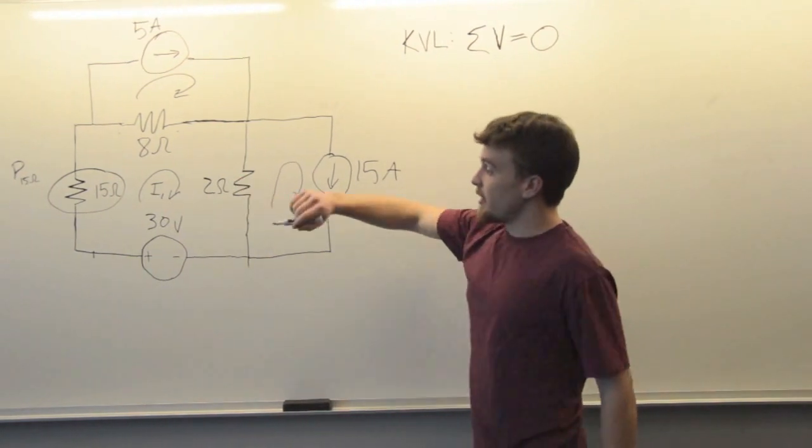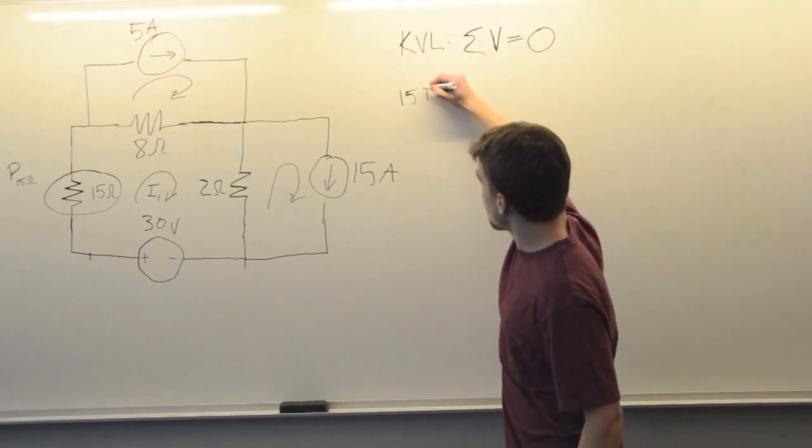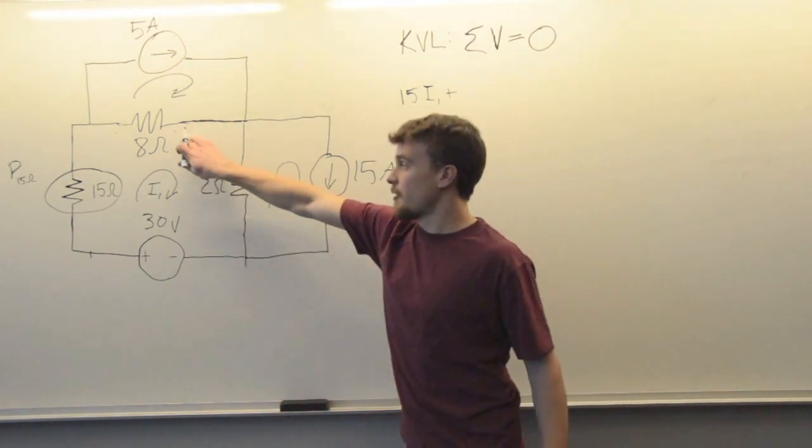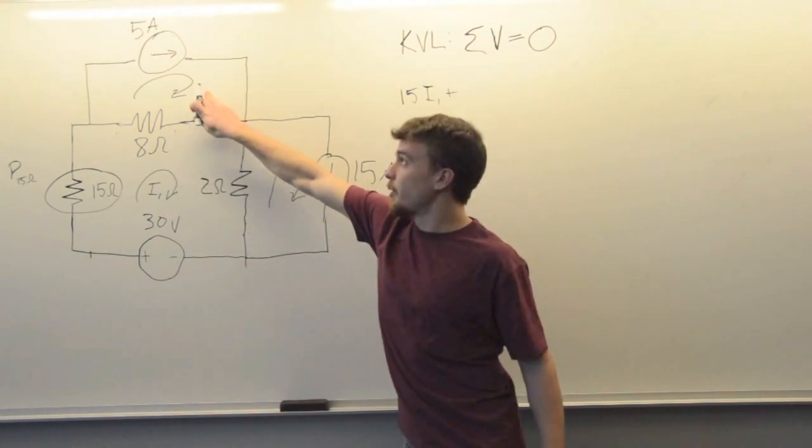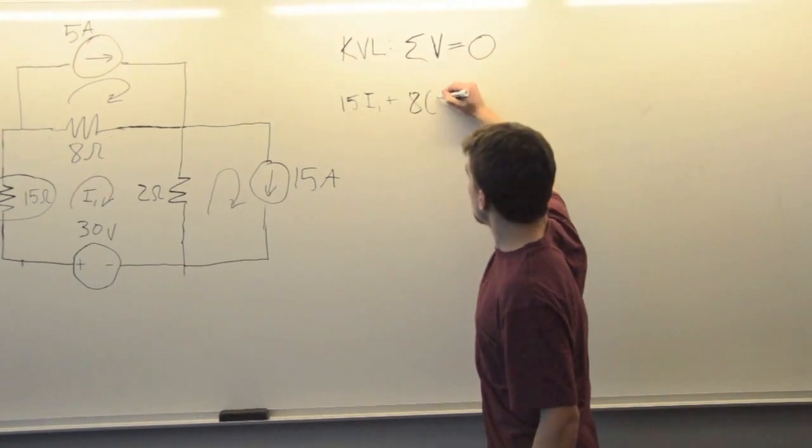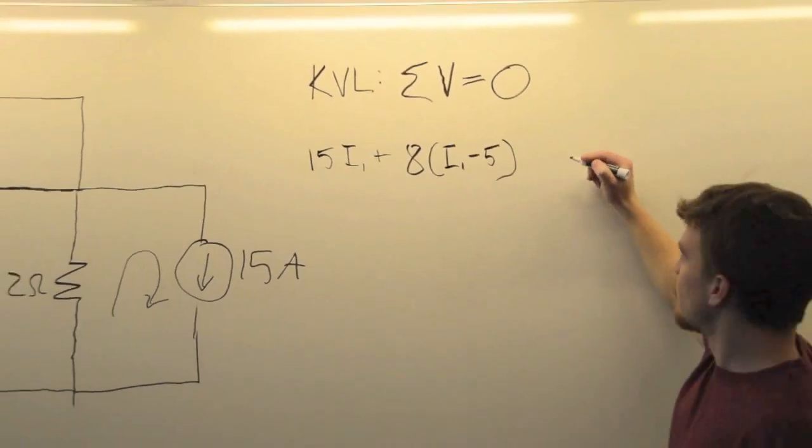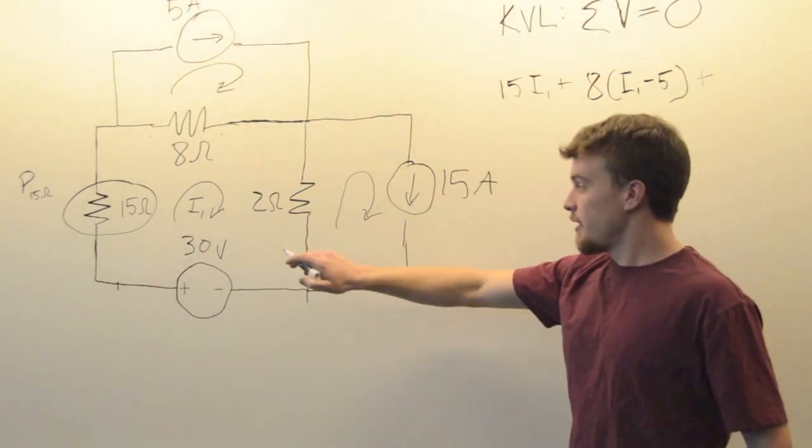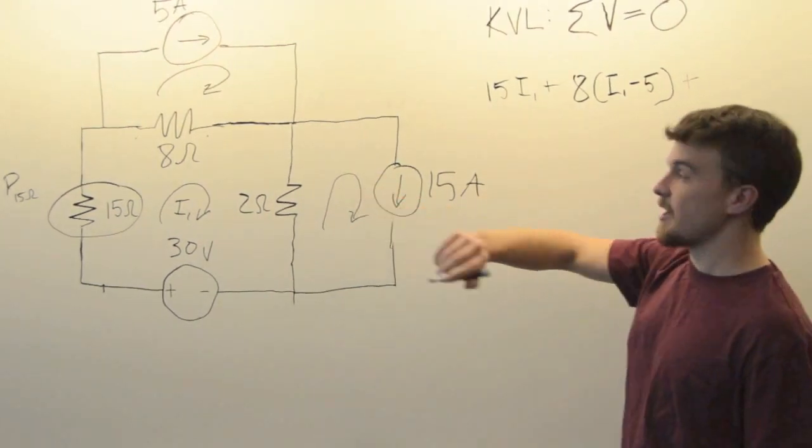Starting with the 15 ohm resistor, the voltage drop across that is going to be 15 times I1. The next voltage drop across this is going to be 8 times I1 minus this loop current, which is 5 amps. The voltage drop across this resistor is going to be 2 ohms times I1 minus this loop current, which is 15 amps.